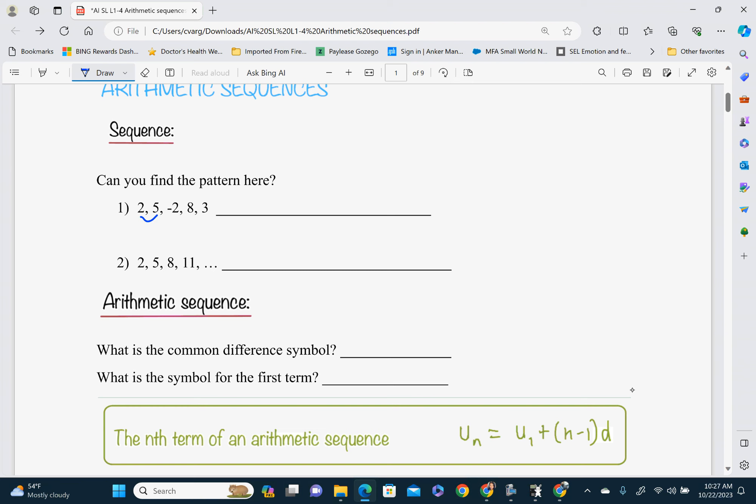So what we're going to do is we're going to look and see if there's any pattern here. So is there a pattern here? It goes up 3, then it goes down 7, then it goes... So there's no pattern here, no pattern.